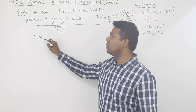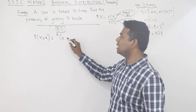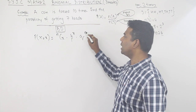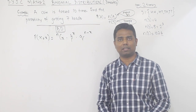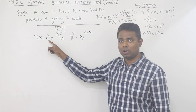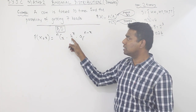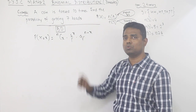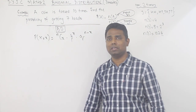The formula is: P(X = x) = nCx × p^x × q^(n−x). P of X equals nCx into p raised to x into q raised to n minus x. I will explain the meaning of each term.